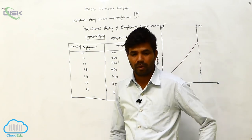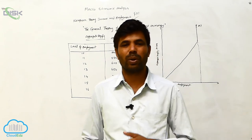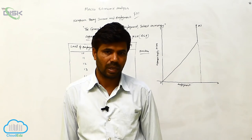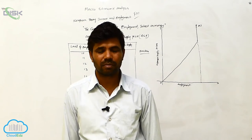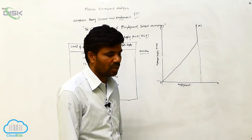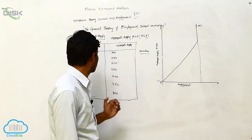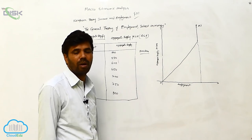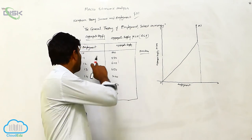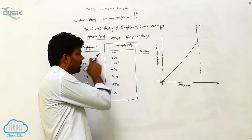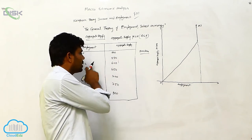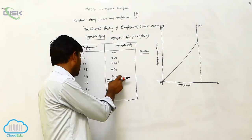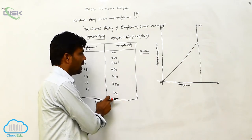What I am totally saying is: when you are increasing the price levels, the supply also automatically increases at the same level — either employment or price levels. Employment is 10 lakhs, aggregate supply is 500; 11 lakhs — 550; 12 lakhs — 600; 13 — 650; 14 — 700; 15 — 750; 16 — 800.